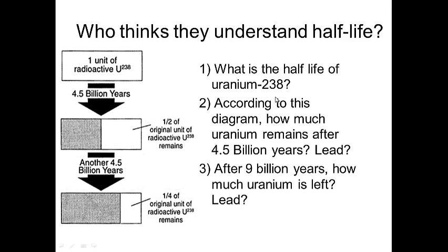Let's see if you understand half-life. Say you have one unit of radioactive uranium-238 — remember, uranium is unstable and wants to become lead. According to this diagram, after 4.5 billion years you get half uranium and half lead. After nine billion years — another 4.5 billion years — you have 75 percent lead and only 25 percent — one-fourth — of uranium remaining.